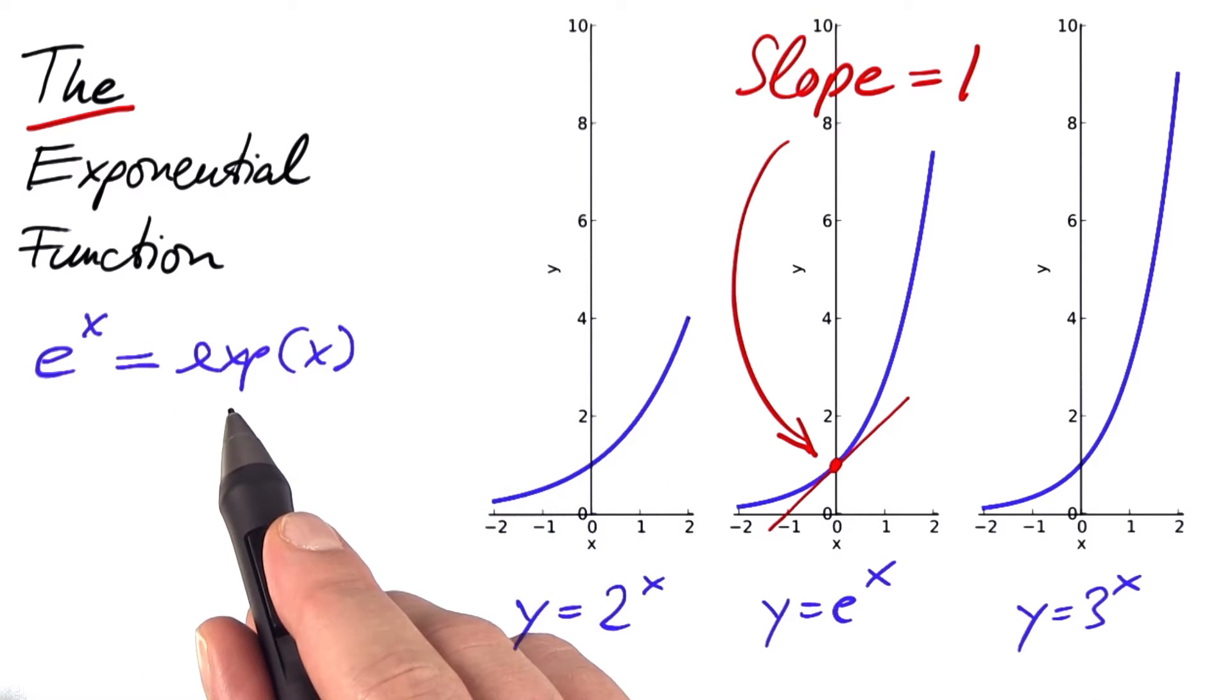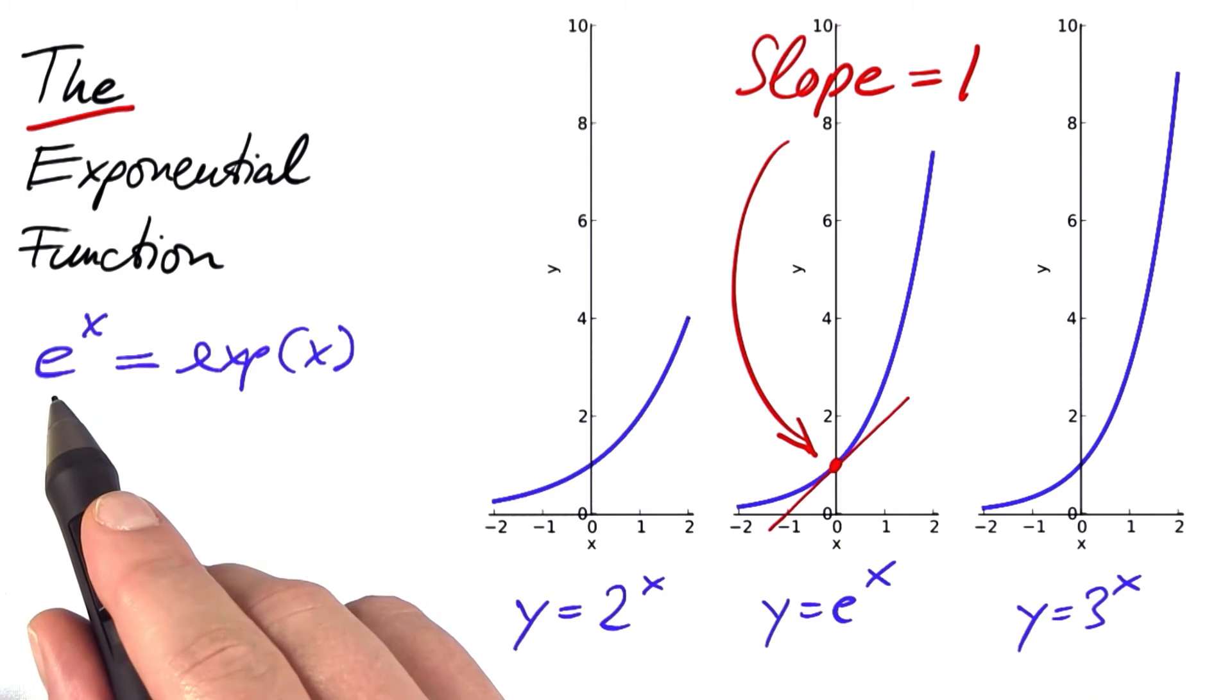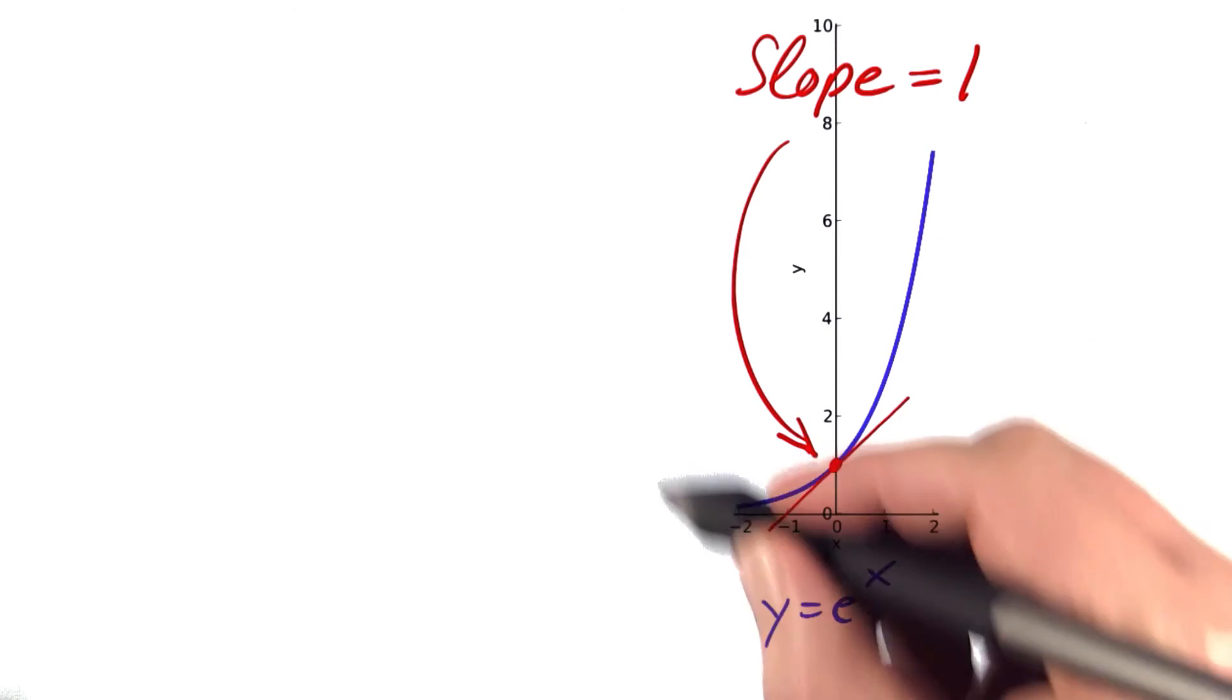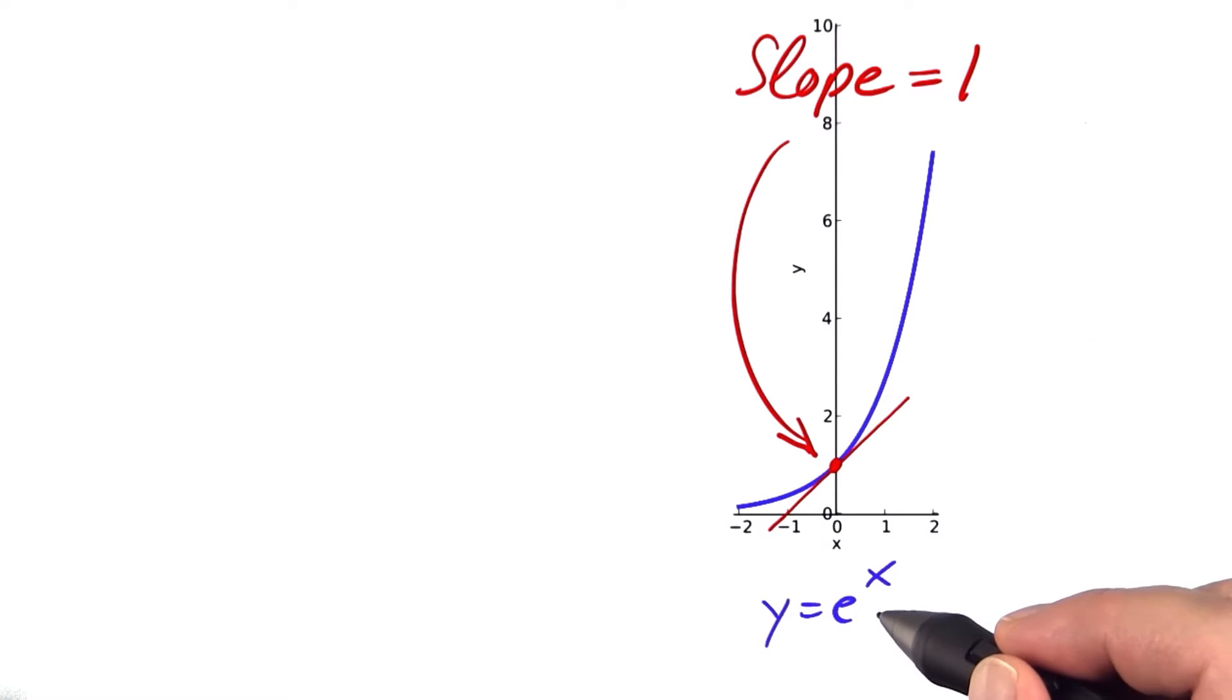This is the natural exponential function. And we already know that its basis, e, is a number between 2 and 3. Now we can start from this idea and compute Euler's number.